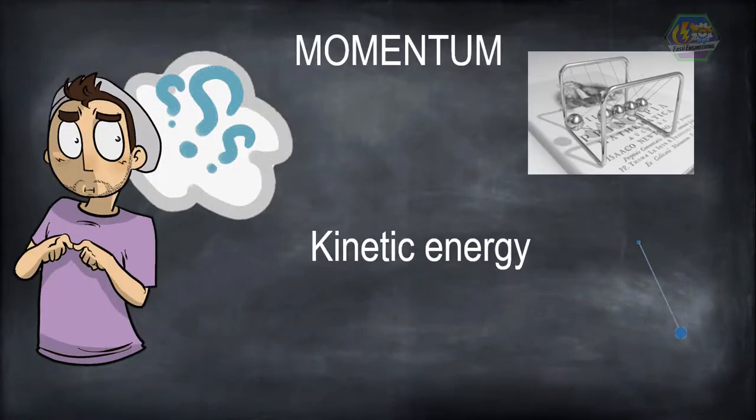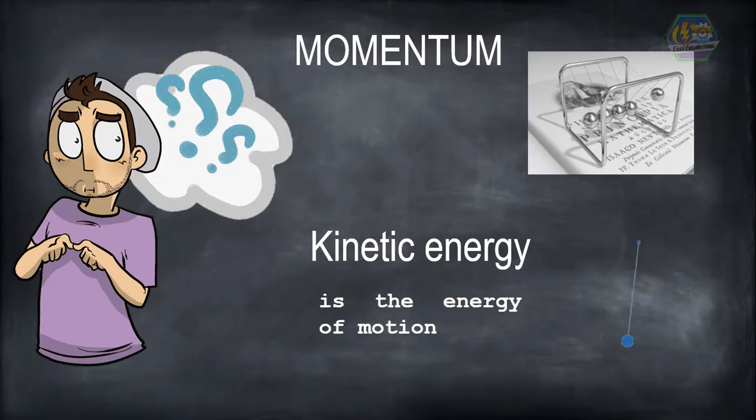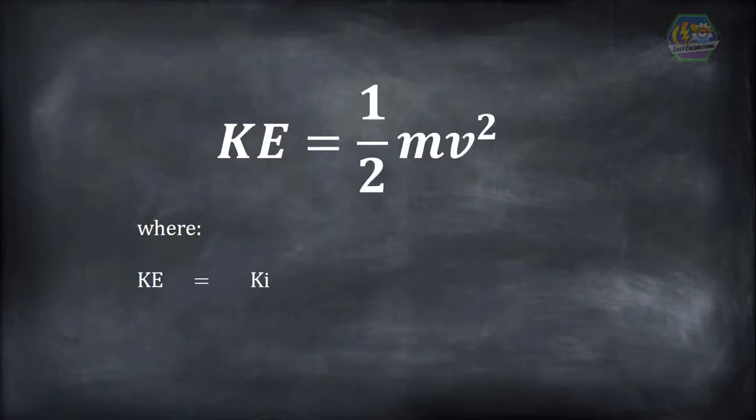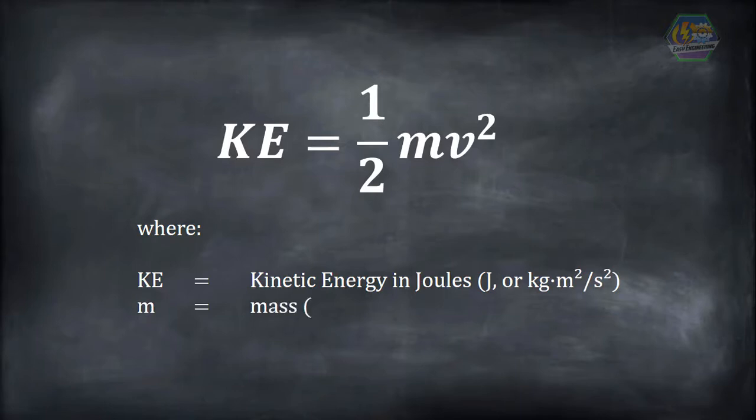Kinetic energy is the energy of motion. The formula for kinetic energy is KE = 1/2 mv² where KE is the kinetic energy in joules or kilogram meter squared per second squared, m is mass in kilograms, and v is velocity in meters per second.